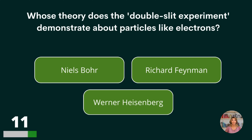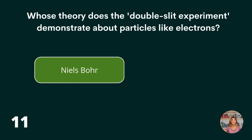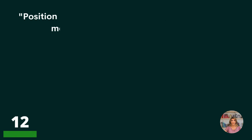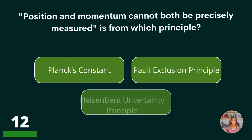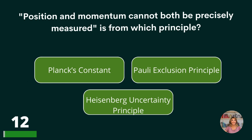Whose theory does the double-slit experiment demonstrate about particles like electrons? Niles Bohr, Richard Feynman, or Werner Heisenberg? Niles Bohr.